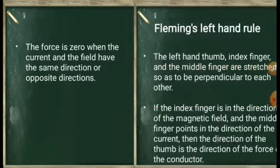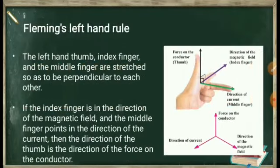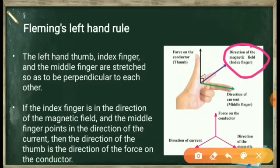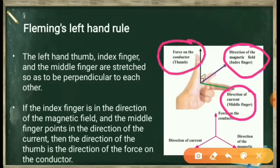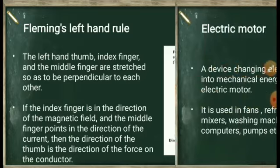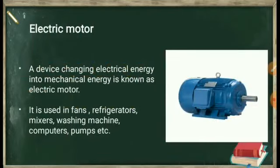This is Fleming's left-hand rule. Hold your left hand so that the thumb, index finger, and middle finger are stretched perpendicular to each other. The index finger points in the direction of the magnetic field, the middle finger points in the direction of the current, and the thumb indicates the direction of the force on the conductor. These three fingers denote three different parameters to keep in mind.